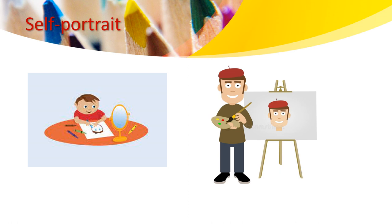Self-portrait. I want to ask you a question: what is a self-portrait? If you look at the image, you will recognize that the two pictures are talking about the same idea — they are drawing their selves. You can see the image on the left: he has a mirror in front of him and he is drawing himself. There are a lot of artists that drew themselves, such as Vincent van Gogh. If you look at the right, you can also see on the canvas there is the same picture of that person. This is what we call a self-portrait.